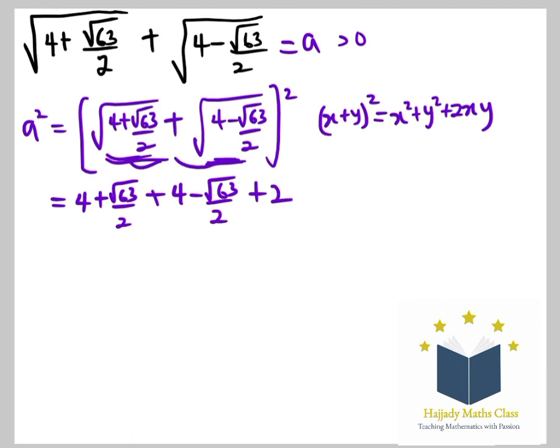Put it in brackets. So I have roots, they both have roots, which is 4 plus root 63 over 2, 4 minus root 63 over 2.